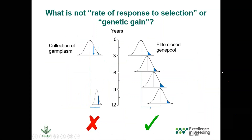This slide is just to emphasize what is NOT rate of response to selection or genetic gain. Some programs might be in a scenario where they have some collection of germplasm, make certain crosses normally using the same parents over and over again, and after many years, identify some promising material — then call the difference between that good genotype and the original population 'genetic gain.' That is not really genetic gain. Genetic gain comes from a formal recurrence selection system in the lead gene pool with a focus on population improvement that aims to increase the frequency of positive alleles.